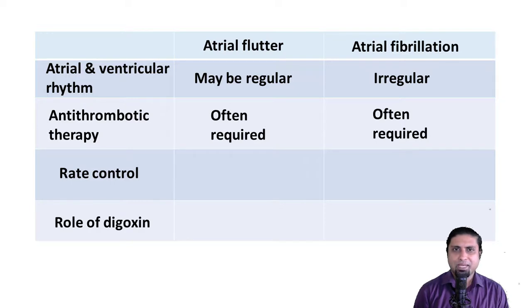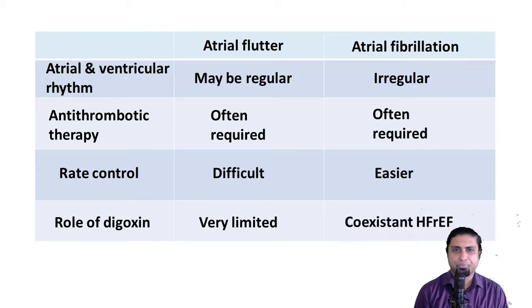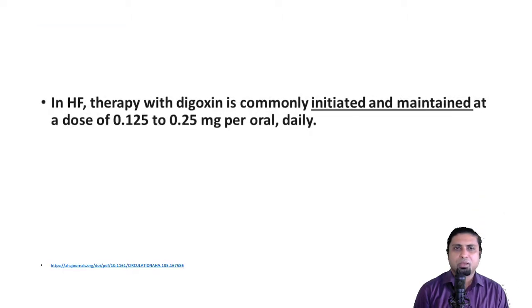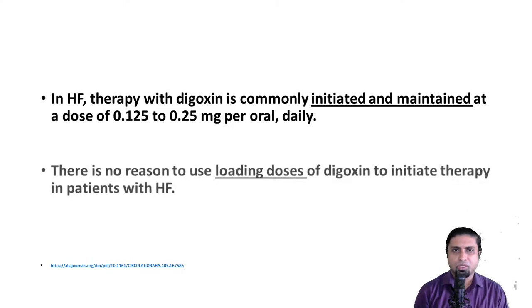Comparing rate control efficacy, it is more challenging in atrial flutter than in atrial fibrillation, which is why the role of digoxin in atrial flutter is extremely limited. But if there is a patient with atrial fibrillation with co-existent heart failure with reduced ejection fraction, digoxin may have a much larger role to play. Finally, digoxin is commonly initiated and maintained at a dose of 0.125 to 0.25 mg orally daily in heart failure. There is no need for loading doses of digoxin in heart failure.